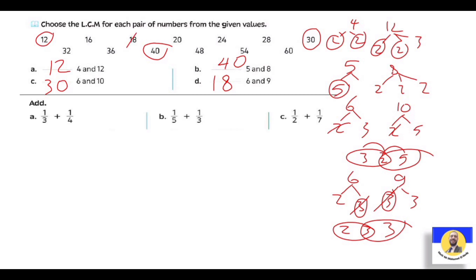The next question - add: 1 over 3 plus 1 over 4. قلنا إن الـ 3 والـ 4 الـ LCM بينهم هو 12. نكتب 12 هنا وهنا. الـ three بقت 12: عملنا × 4، يبقى 1 × 4 = four. والـ four بقت 12: عملنا × 3، يبقى 1 × 3 = three. So the answer is seven over 12.